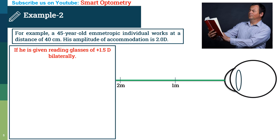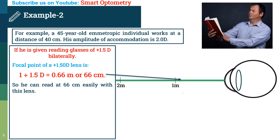Now, if he is given reading glasses of plus 1.5 diopter instead of 0.75, then focal point of a plus 1.5 diopter lens is 1 divided by 1.5 equal to 0.66 meter or 66 cm. So, he can read at 66 cm easily with this lens.